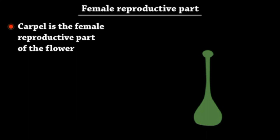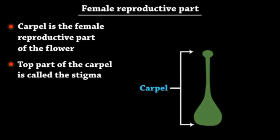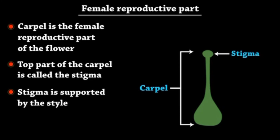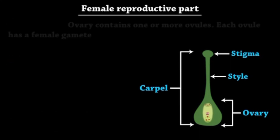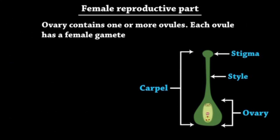Carpel is the female reproductive part of the flower. The top part of the carpel is called the stigma. Stigma is supported by the style. The base part of the carpel is the ovary. The ovary contains one or more ovules, and each ovule has a female gamete.